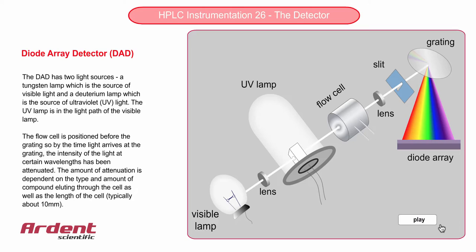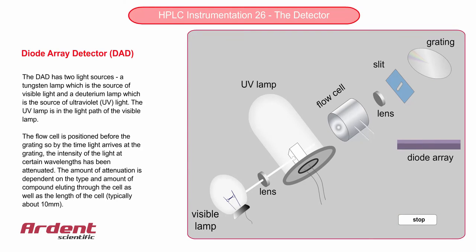This detector is capable of displaying 3D chromatograms, which consists of the usual time and response axes, but with the addition of a third axis, which is wavelength. This extra wavelength information can help confirm the identity of an unknown, and also can aid in peak purity.